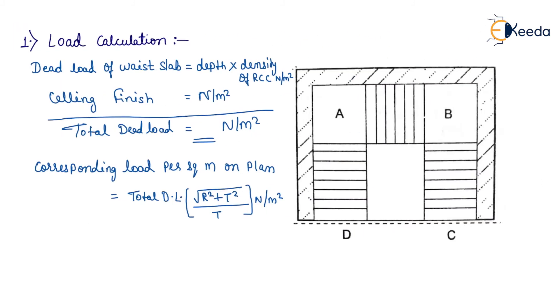Dead load of waist slab equals depth times density of RCC in Newton per meter square. Ceiling finish will be given in the question in Newton per meter square. Now total dead load will be calculated in Newton per meter square. Corresponding load per square meter on plan equals, using the formula, total dead load times √(R² + T²)/T.